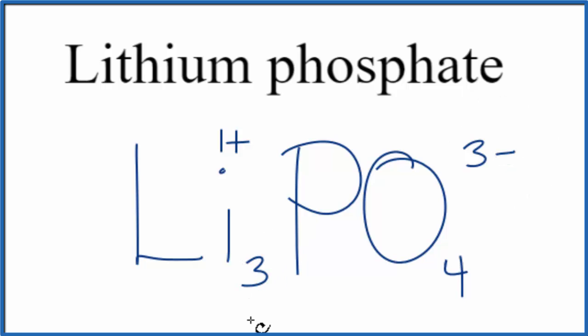If we put a 3 here for lithium, we have 3 times 1-plus, that's 3-plus, that'll balance out the 3-minus. We'll have a net charge of 0. So this is the formula for lithium phosphate.